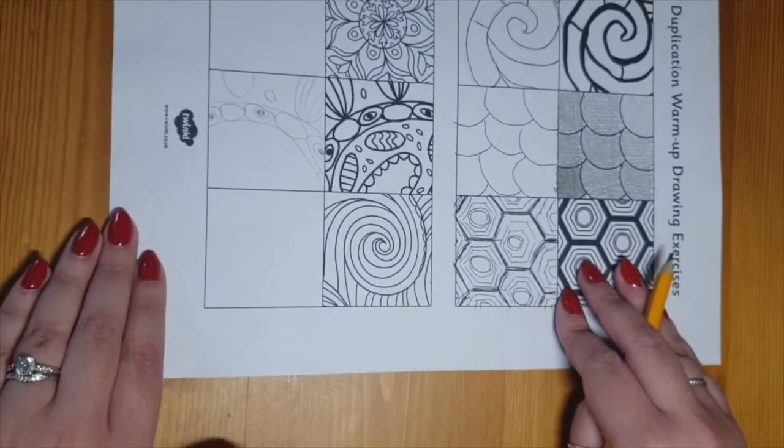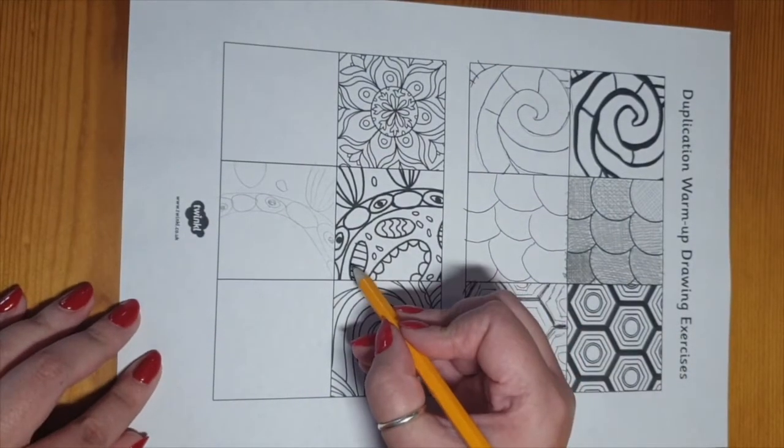Sometimes when you're mirroring you need to rotate the paper to be able to see different shapes and different angles.